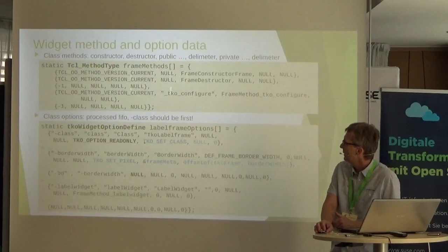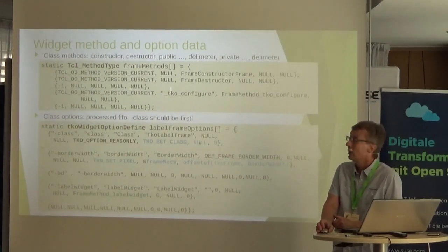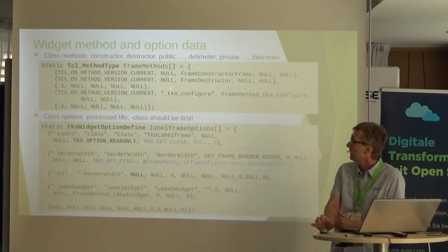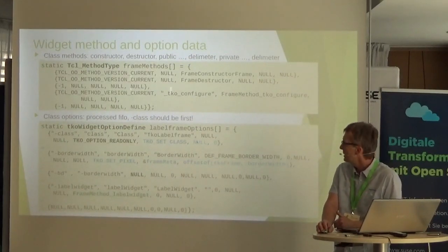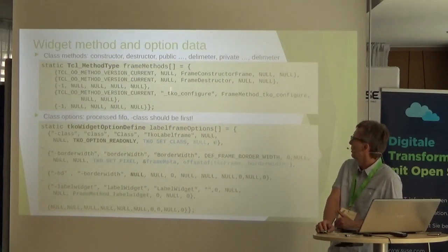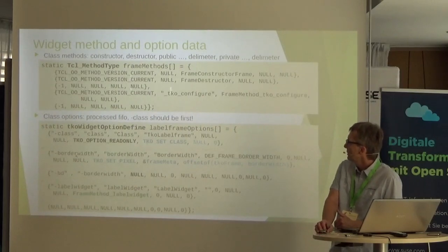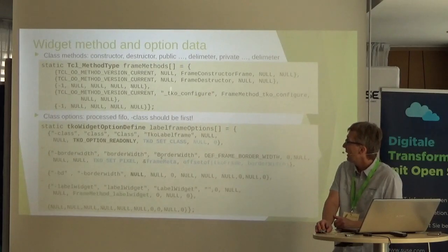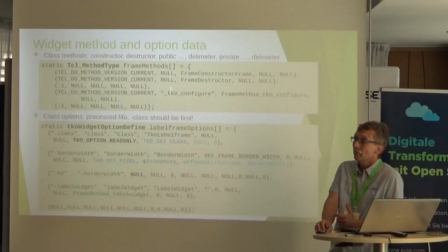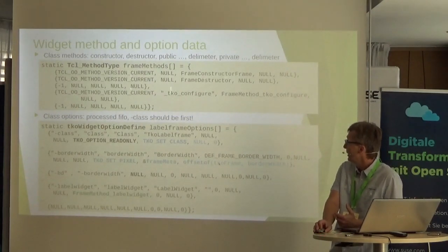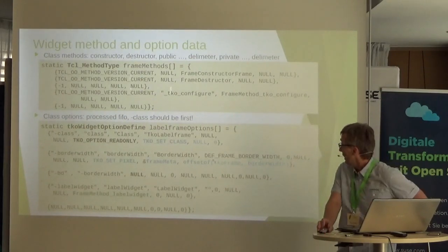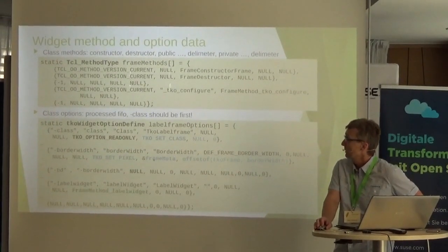For option definition, there is also a structure. A class option doesn't need to be saved because the value is already in the array variable. A pixel-related option is a common option that requires the frame metadata from the object — you have a structure holding all the values of the frame, including the border bits, with the offset inside the structure providing access.